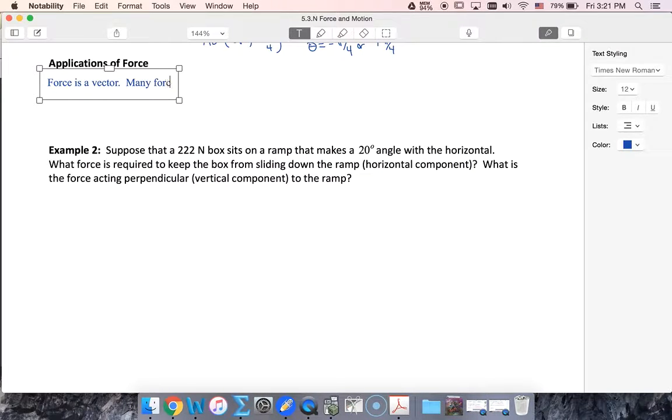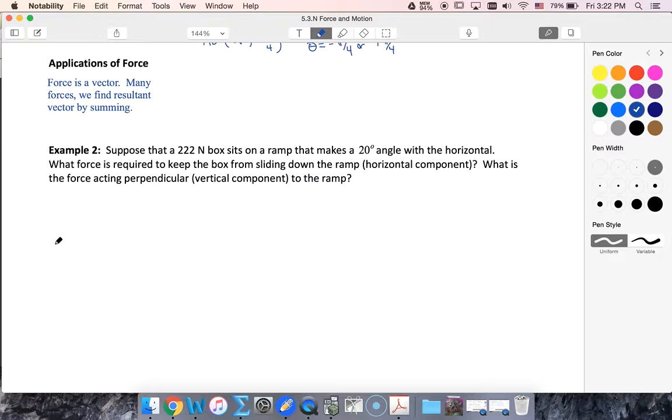Many forces, we find the resultant vector using sums. So let's look at an example of this. We've got a 222 Newton box sitting on a ramp that makes an angle 20 degrees with the horizontal. So let's start by making a sketch.